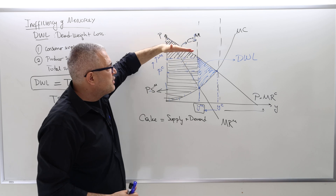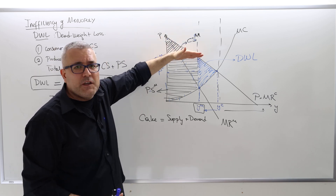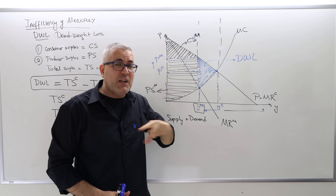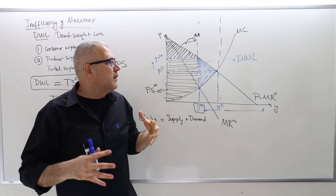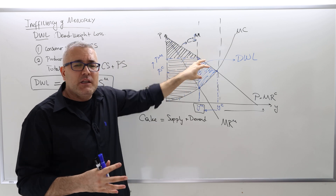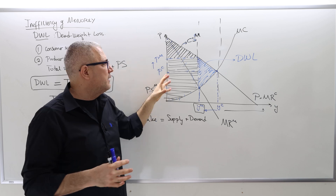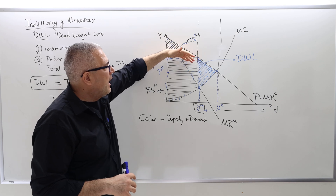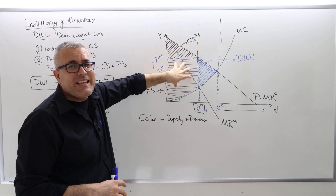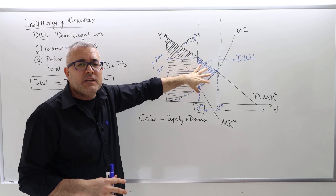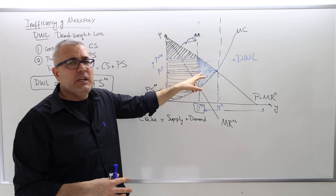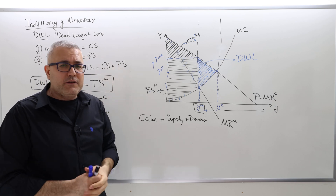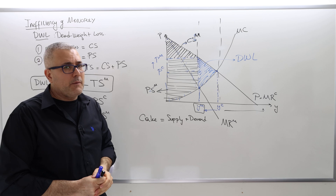The reason why deadweight loss exists is because the monopolist is charging a uniform fixed price. Because of this fixed price, in the next chapter we'll talk about price discrimination — it's one way to actually extract that surplus and increase the profitability of the firm. Because of uniform pricing and the desire to maximize profit, the monopolist finds it beneficial to leave some cake unconsumed on the table. We'll do a numerical example next.